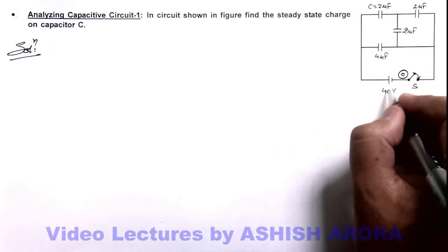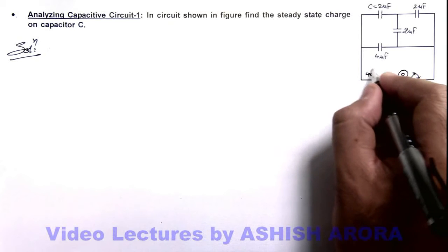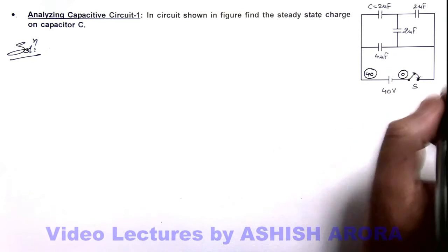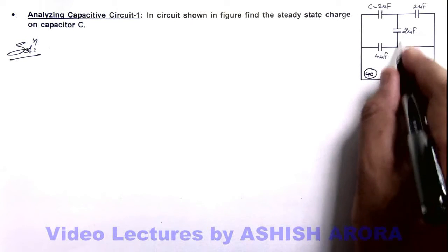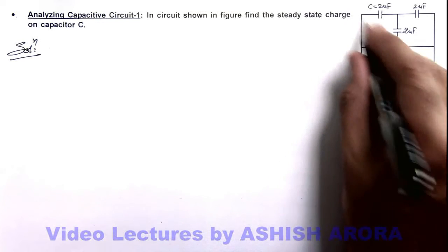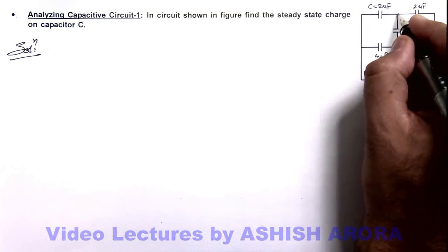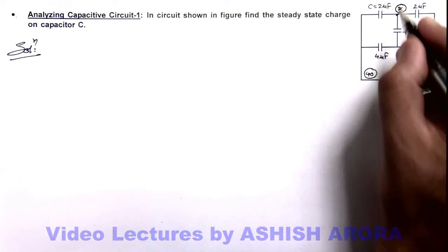So here on all the connections potential will be zero and here it'll be 40. And this is the node of this circuit where potential is unknown so we take here potential is equal to x.